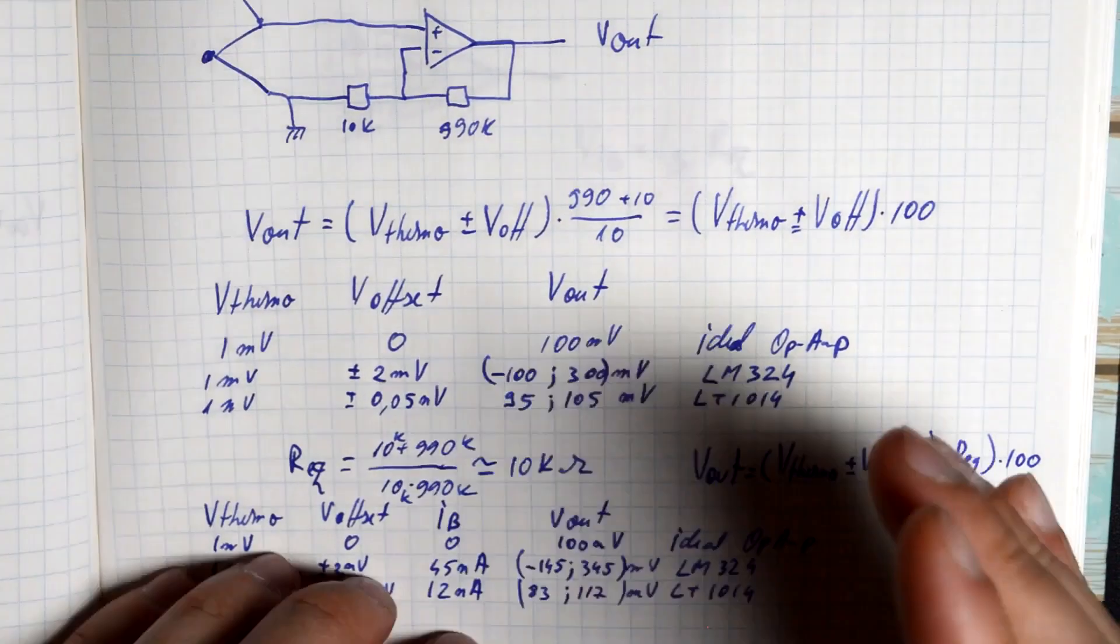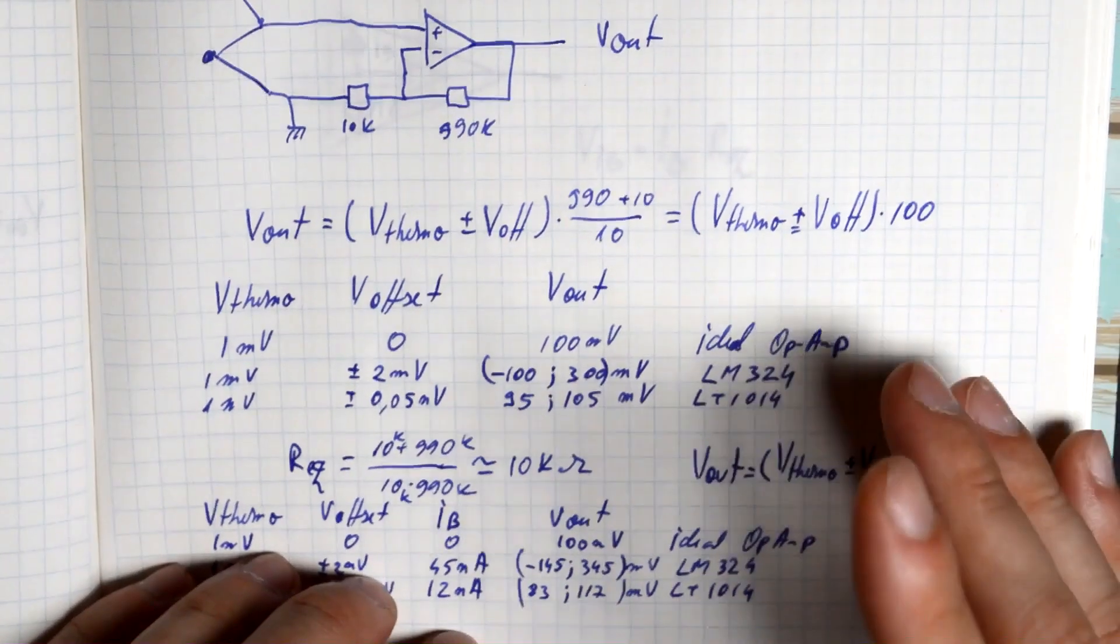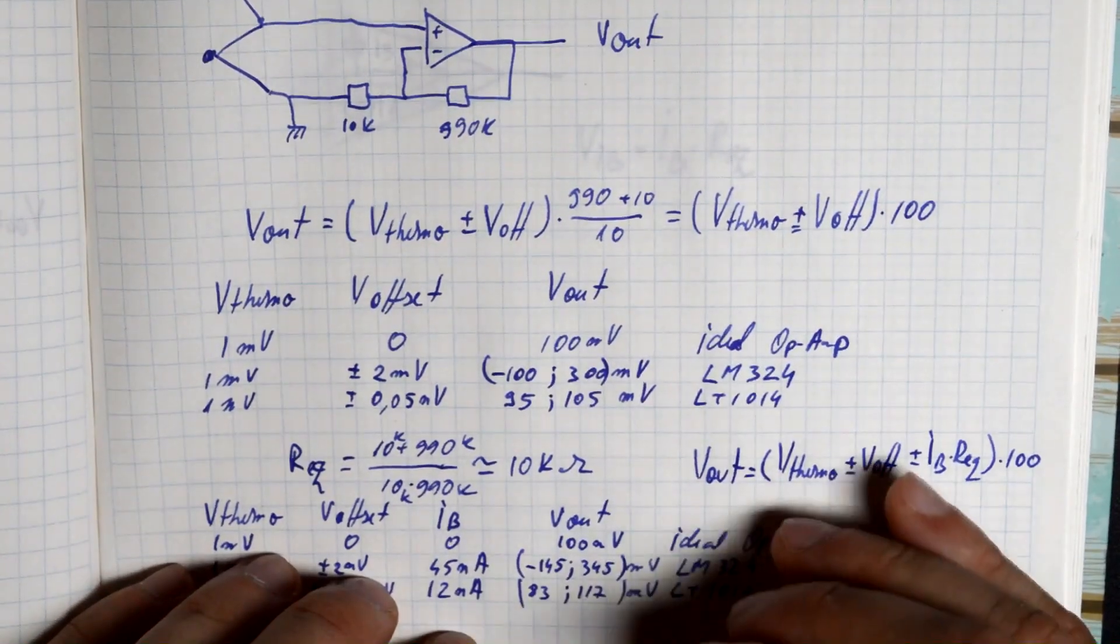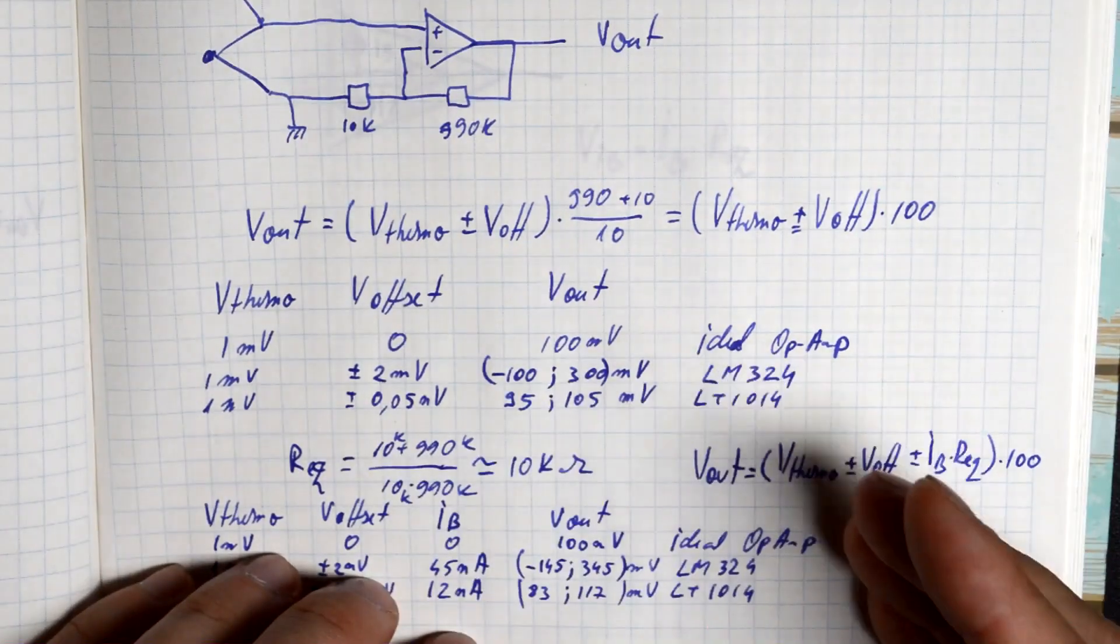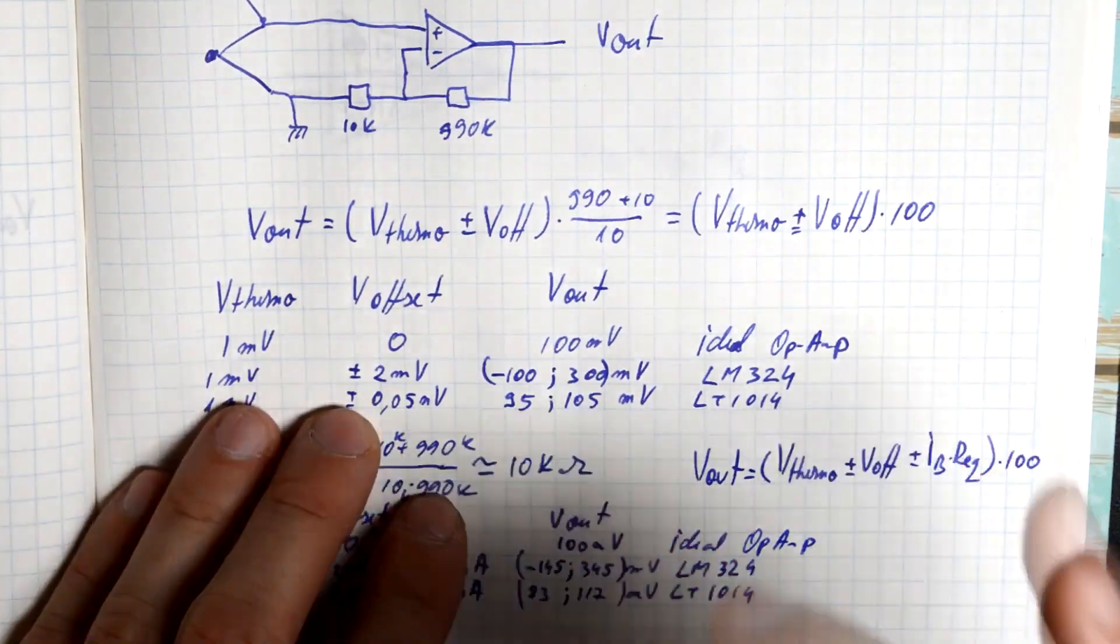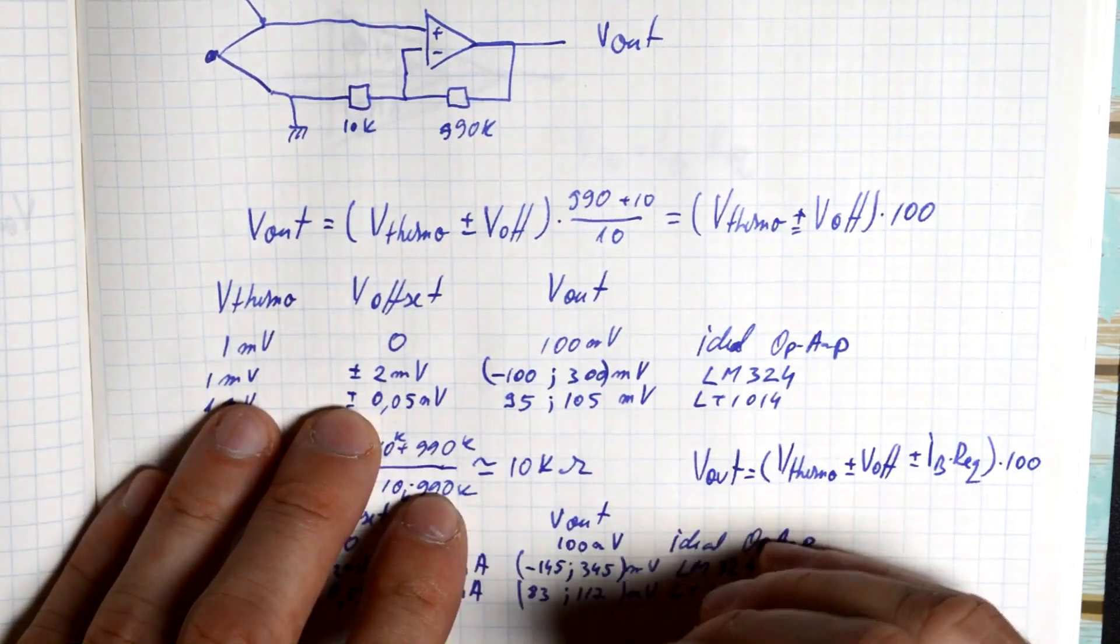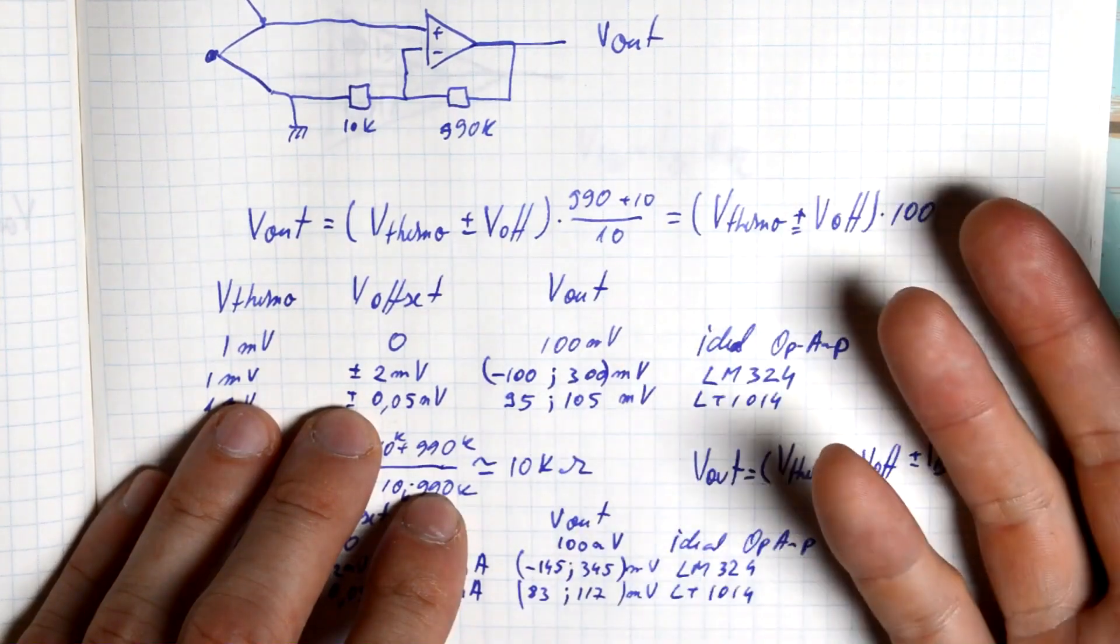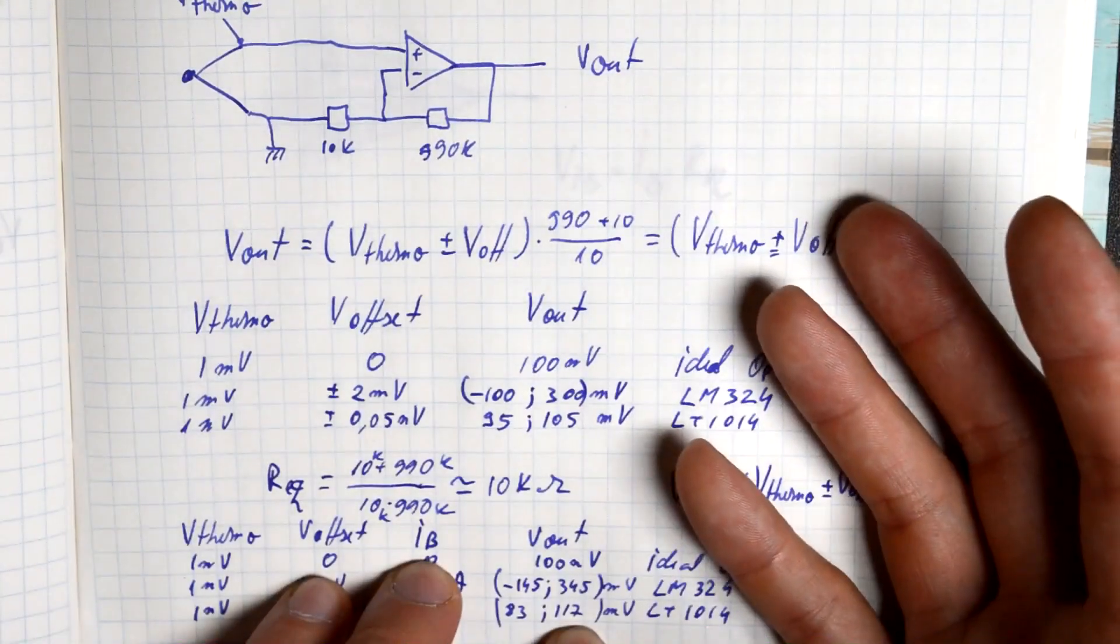So in conclusion, voltage offset needs to be taken into account when designing op-amp circuits, and its effects can be minimized by choosing the appropriate components. On one side, the op-amp. On the other side, the peripheral components. Now there is one more thing I want to look at today, and that is, why do we have input offset and input bias current? I mean, where are these things coming from?